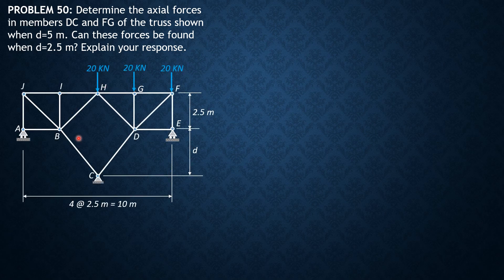This is the given truss. Checking this truss, it is determinate. We compute the number of reactions expected — it is four: one roller, one roller, then two at the pin. Then we determine the number of bars; it should be equal to two times the number of joints. So this truss is determinate, and when d is 5, it is stable.